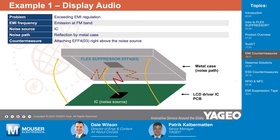Let's start with a first example — a very basic one. In the car, you have the display audio, and the EMC test is not being passed. Your IC is noisy, creating noise in the FM band. The noise has a noise path that is reflected by the metal case, so amplified. In order to solve this issue and pass your EMC test, you simply attach the flex suppressor right above the noise source. It's not like a Faraday cage — it's going to break this magnetic flux and absorb it.